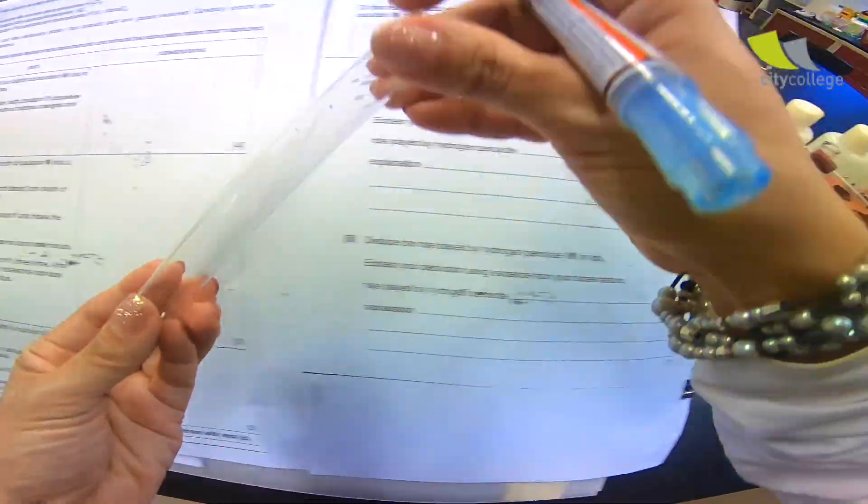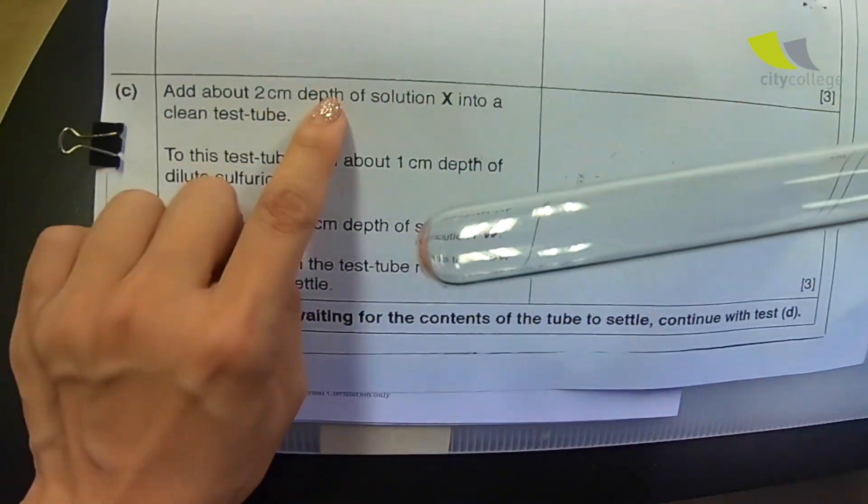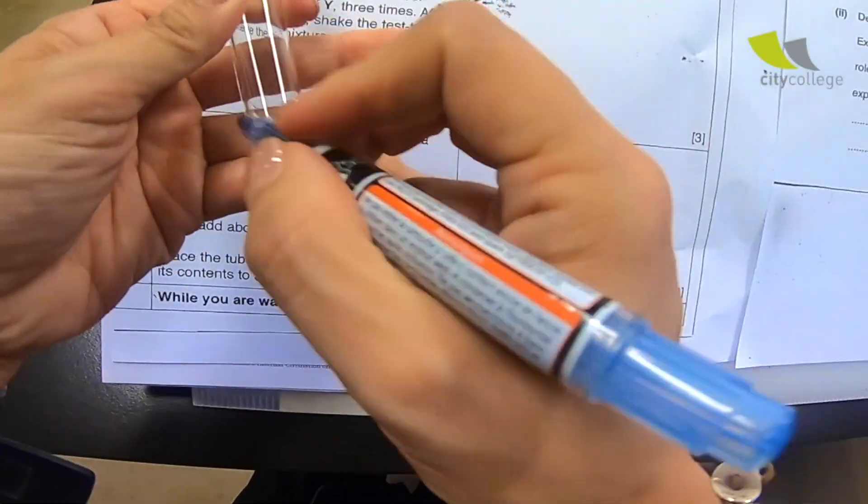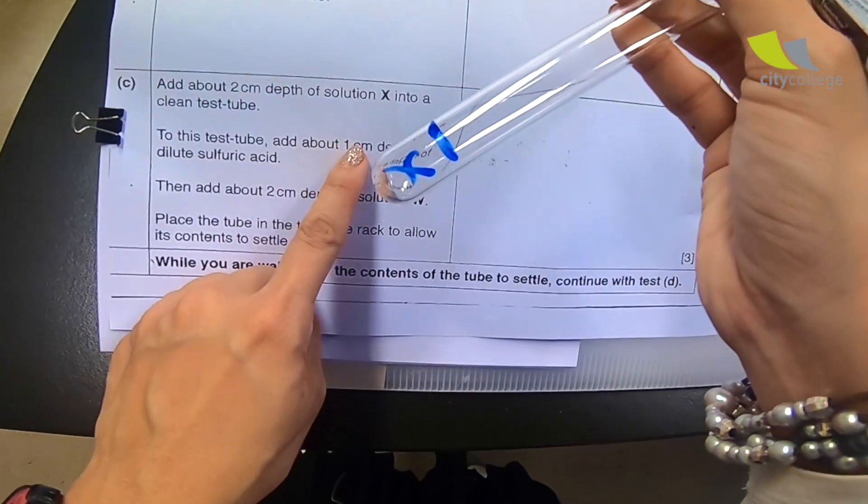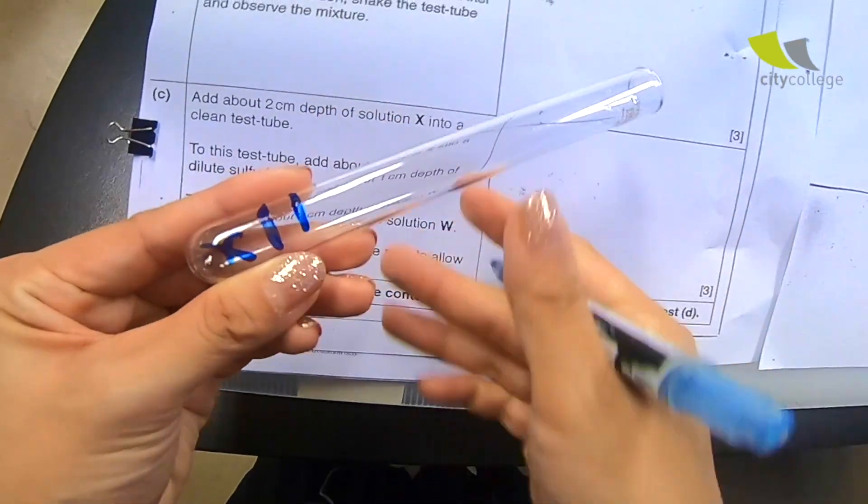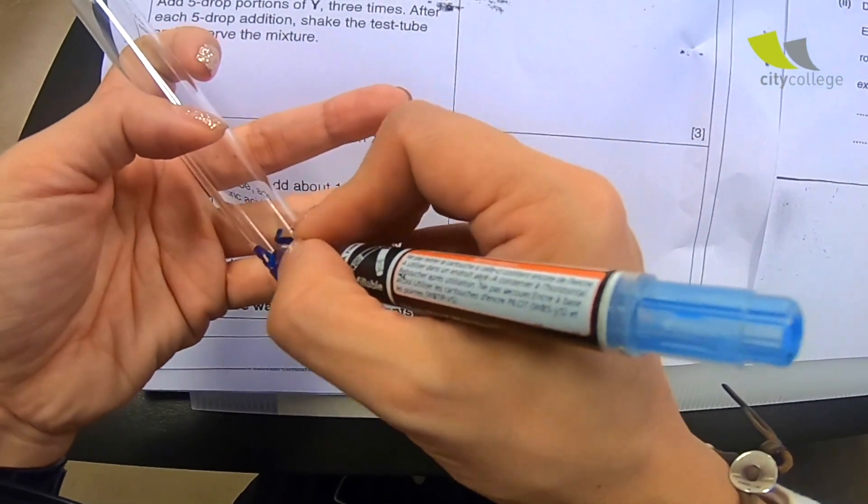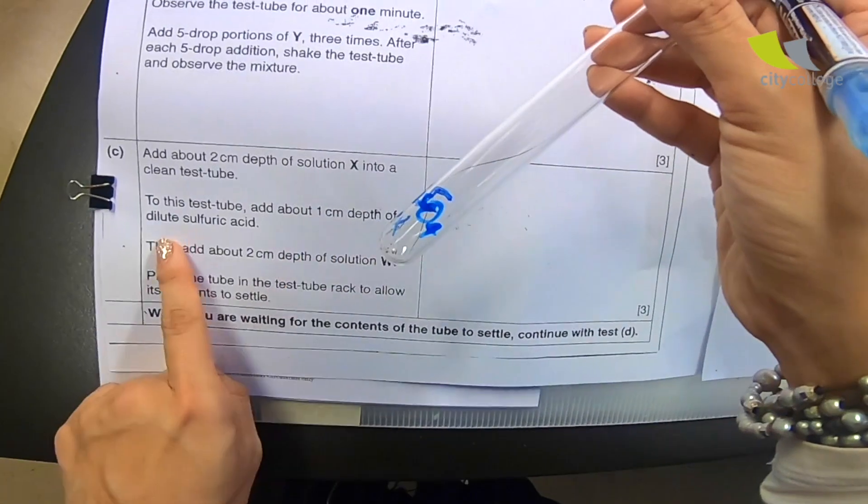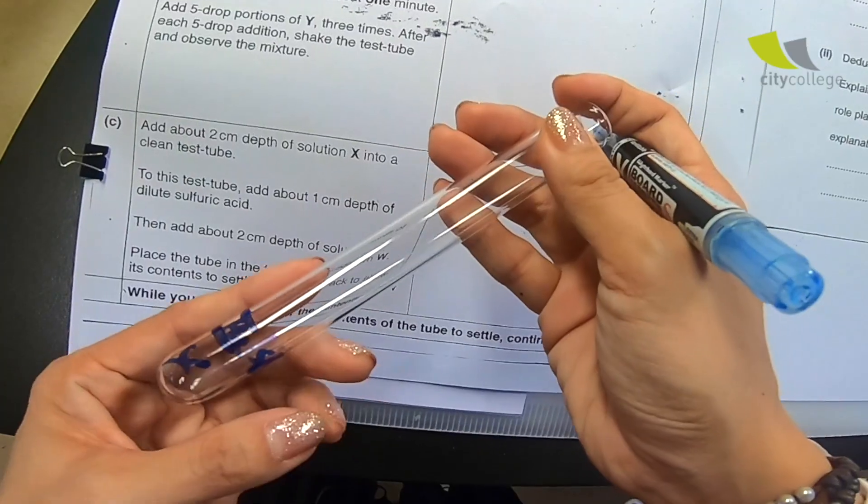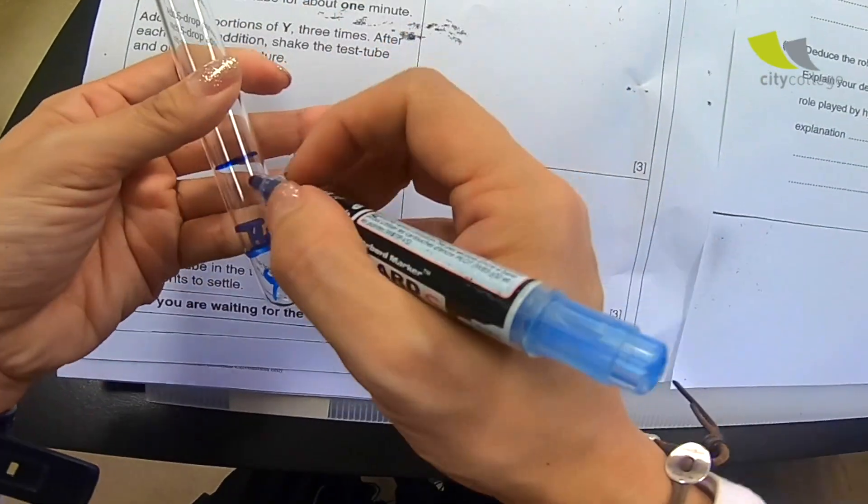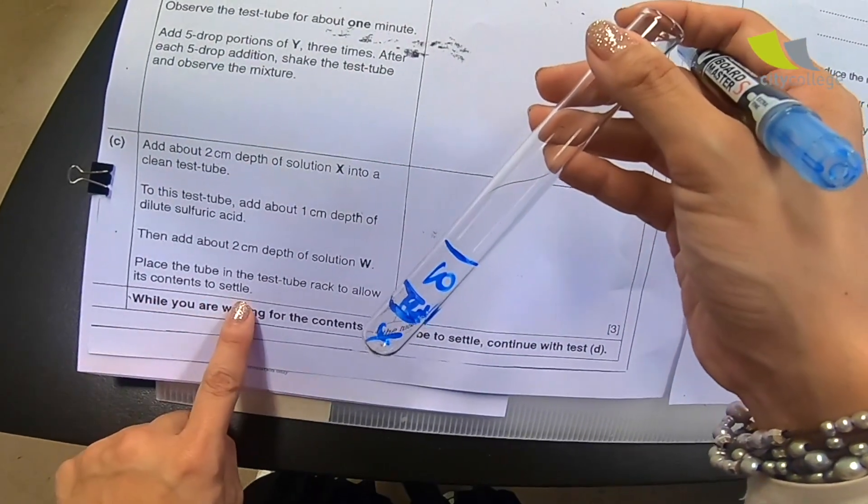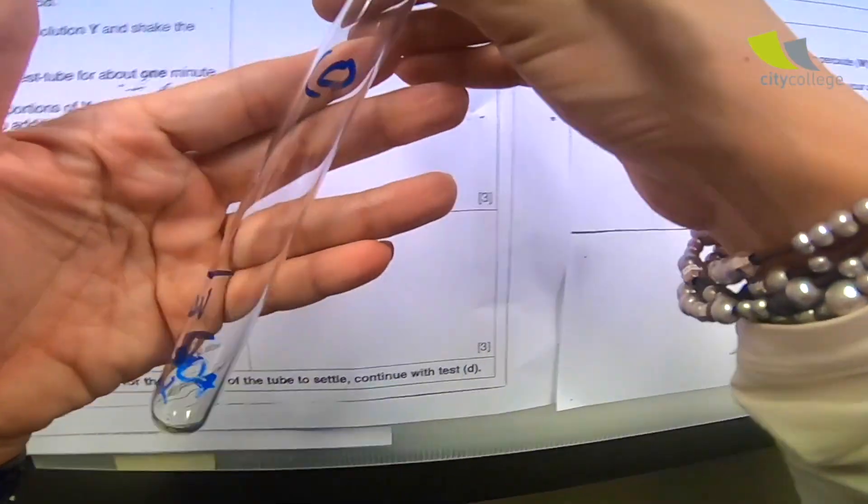Let's take another test tube and do the label for part C. Part C now, add about 2 cm depth of solution X into a clean test tube, 2 cm X. And to this test tube, add about 1 cm depth of dilute sulfuric acid, 1 cm H2SO4. And add about 2 cm depth of solution W. So I need to add another 2 of W. That's a lot of steps. Then place the test tube into the rack to allow its content to settle down. So of course, C. And let's put it back to the rack.